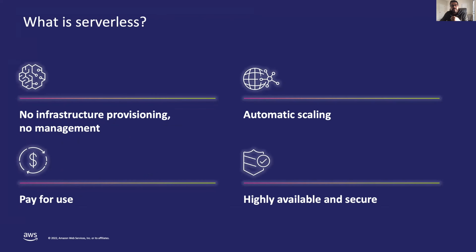Serverless, in the view of AWS, has four primary characteristics. First: no infrastructure provisioning, no management. The customer does not need to worry about managing infrastructure in a serverless world. AWS handles tasks such as operating system patching and retiring aging hardware. When you don't need to manage infrastructure, you can focus on what differentiates your business.